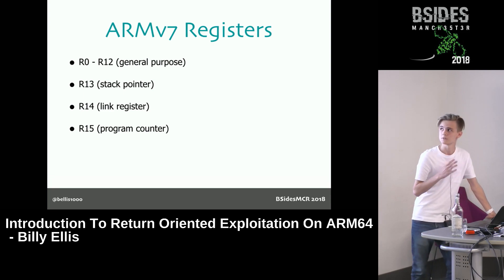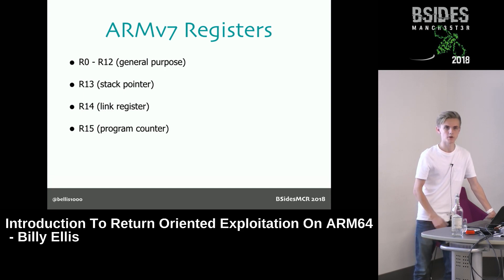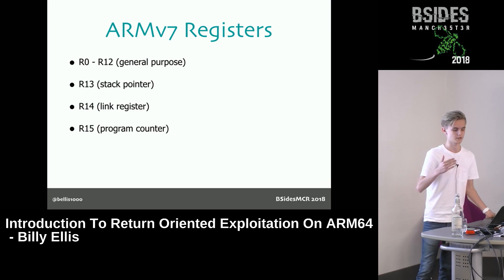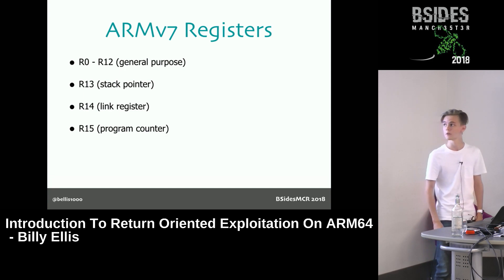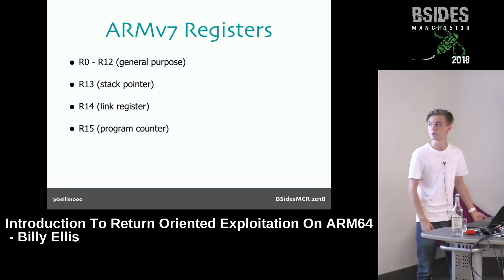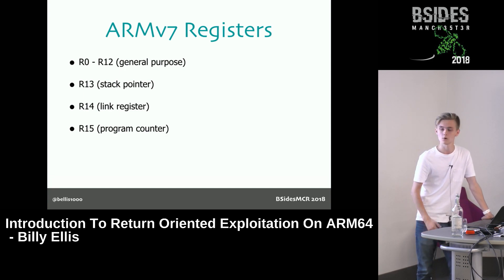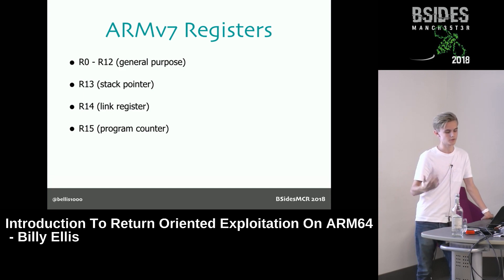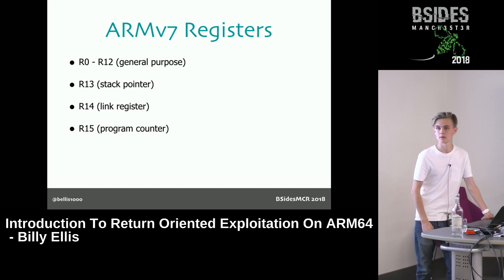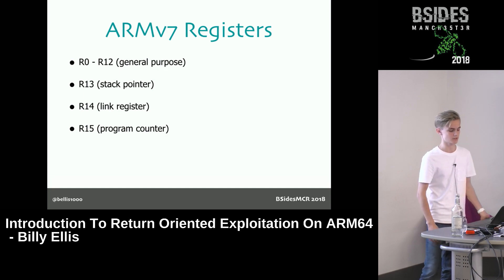The first few registers — R0 up until R3 — are used for passing arguments to functions, so you would pass your first argument in R0, second in R1, and so on. Then you have some special purpose registers. R13 is used as the stack pointer register, which always holds the address pointing to the top of the current stack frame. R14 is the link register, which holds an address where code execution resumes after a function returns. And R15 is the program counter, which stores the address of the next instruction to be executed.